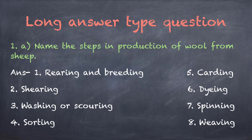Long answer type question. Question 1A: Name the steps in production of wool from sheep. Answer: The steps in production of wool from sheep are: 1st Rearing and breeding, 2nd Shearing, 3rd Washing or scouring, 4th Sorting, 5th Carding, 6th Dyeing, 7th Spinning, 8th Weaving.